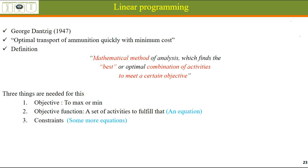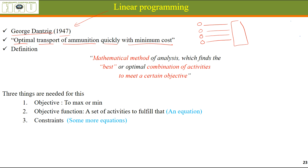What is Linear Programming and how did it come into being? It was discovered by George Dantzig in 1947 when he was working to find the optimal transport of ammunition quickly with minimum cost — from different depots he had to transport ammunition to different places, and what plan would make this activity come out to minimum cost. So he used this technique that was later called Linear Programming.